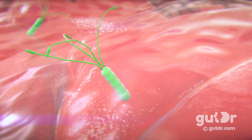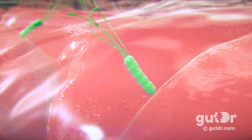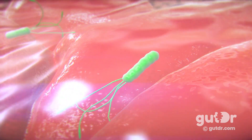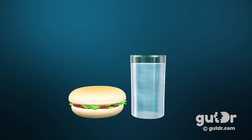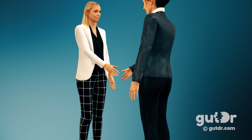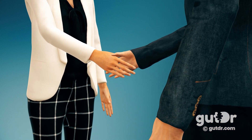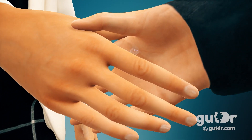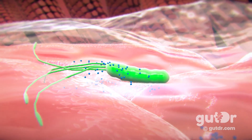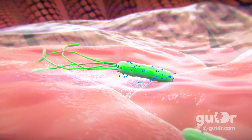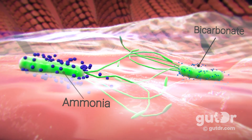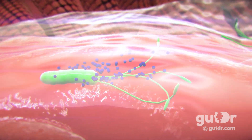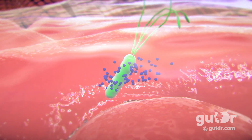Helicobacter pylori moves around with three to seven whip-like tails, called flagella, located at one end. It can be transmitted through contaminated food and water, or through close personal contact, such as in saliva. It is a very common cause of gastritis and peptic ulcers worldwide. Helicobacter pylori is able to lodge in the mucous layer and can secrete bicarbonate and ammonia to help neutralize acid, thereby protecting itself from direct damage by stomach acid.